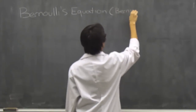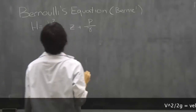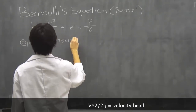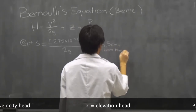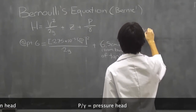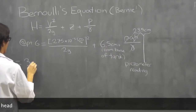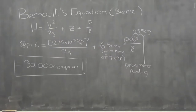We can use Bernoulli's equation to find the potentiometric head at a point. The first term is the velocity head, which we can get from our Darcy calculations. The second term is the elevation head, which is the distance between a piezometer bottom and a datum — in this case, the base of the tank. The final term is the pressure head. As you can see, the velocity head is almost negligible and is often ignored in groundwater calculations.